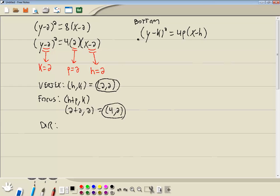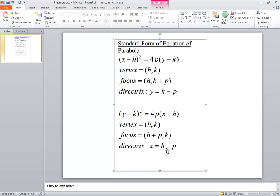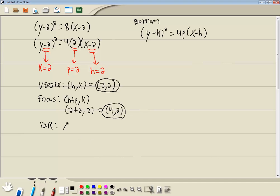Now our directrix. Work on the bottom formula. Directrix is x equals h minus p. So x equals h minus p. h we said was 2 minus p, which we said was 2, so we got x is equal to 0.